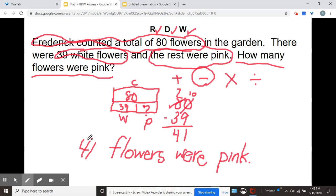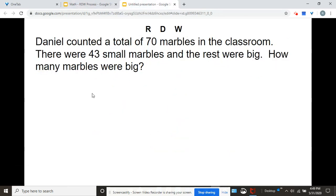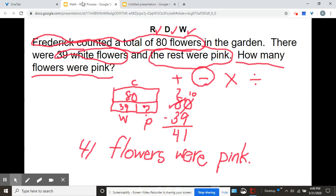All right, now what I'd like for you to do is solve this one on your own. So I'm going to read it with you, and then you're going to solve it on your own. Daniel counted a total of 70 marbles in the classroom. There were 43 small marbles, and the rest were big. How many marbles were big? So this problem is similar to what we did here.